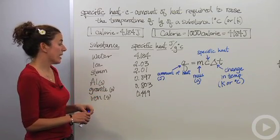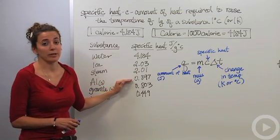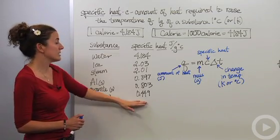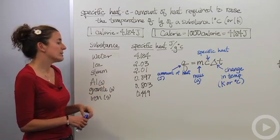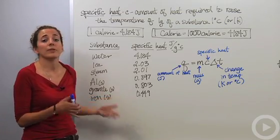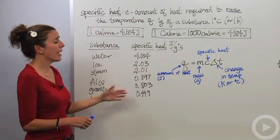Aluminum is also relatively high compared to other metals. Metals typically have very low specific heat values, but aluminum is pretty high at 0.897 joules per gram degree Celsius. The lower the number, the easier it is for it to heat up.